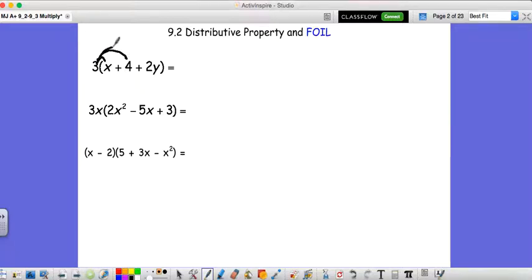and you'll bring the 3 to the 2y. So when you distribute, you get 3x plus 12 plus 6y. And this is something you've seen before.